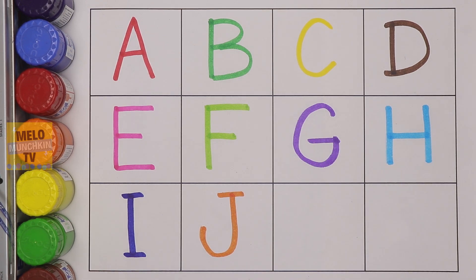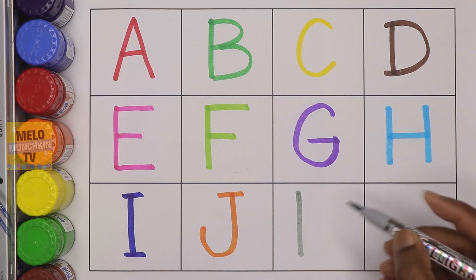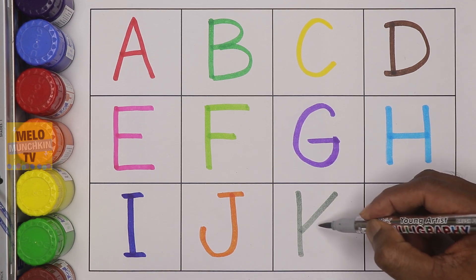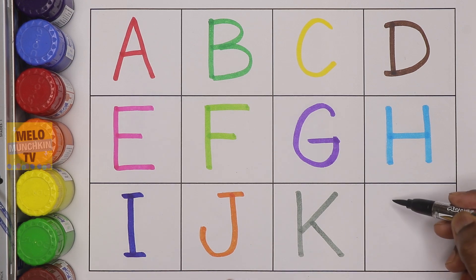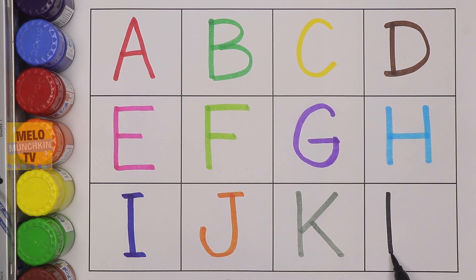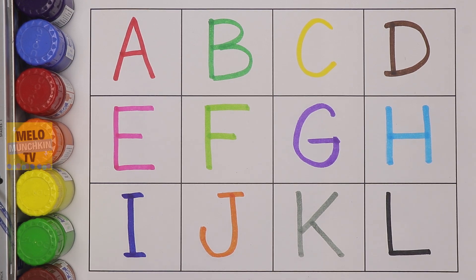Gray color, K. K for kite, K for kite. Black color, L. L for lion, L for lion.